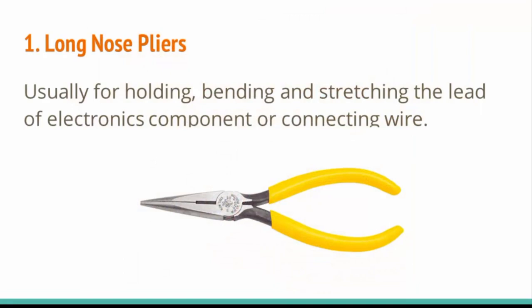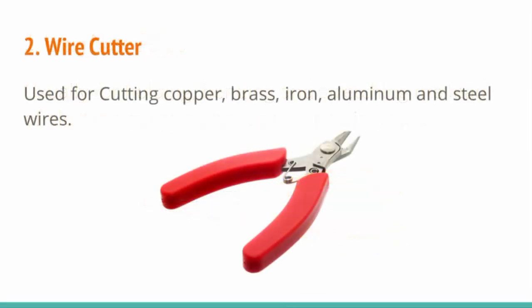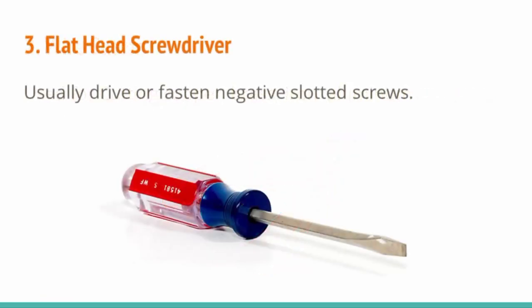Number 1: Long nose pliers — usually for holding, bending and stretching the lead of an electronics component or connecting wire. Number 2: Wire cutter — used for cutting copper, brass, iron, aluminum and steel wires.